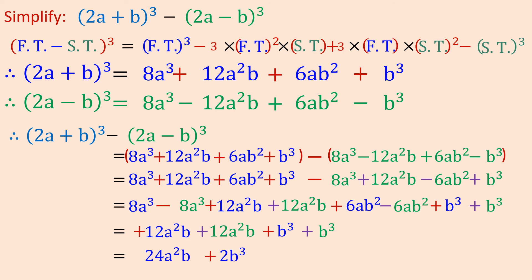So the final simplified result is 24a²b plus 2b³. When you simplify (2a + b)³ minus (2a - b)³, you get the answer as 24a²b plus 2b³.